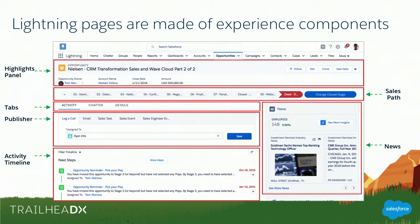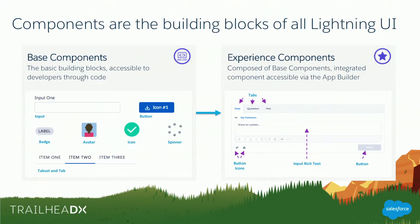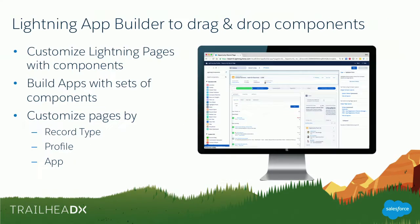Components are building blocks of the Lightning UI, and there are two kinds of components. Experience Components are the components you actually use to put inside a Lightning Page. Base Lightning Components are the smaller building blocks of code that you use to build these Experience Components. Base components are code. Experience components are something you can use in the Lightning App Builder to drag and drop into a Lightning Page, which will then be available in Lightning Experience UI.